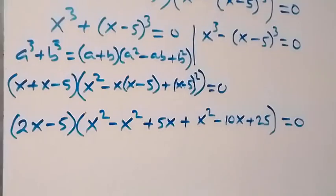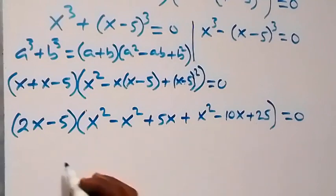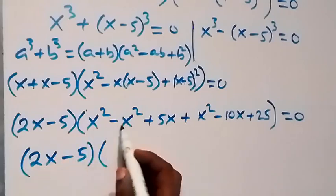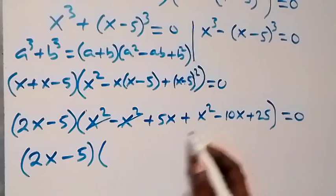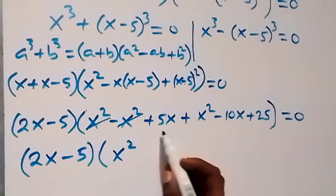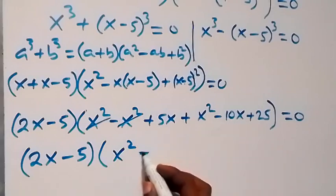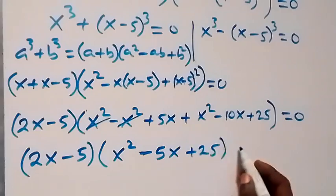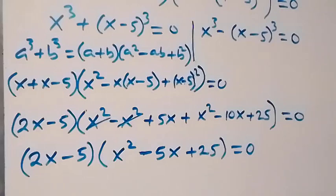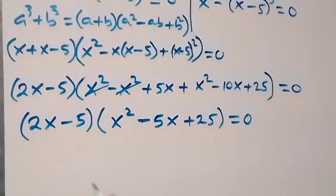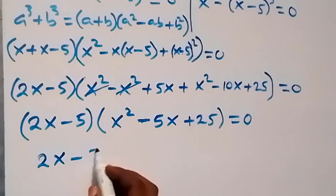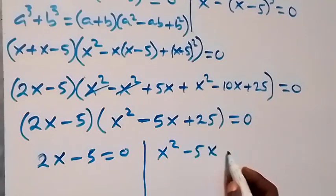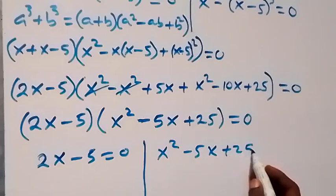After simplification the bracket becomes 2x minus 5, into bracket: x squared and negative x squared cancel out, leaving x squared, plus 5x minus 10x which is minus 5x, plus 25. So we now have 2x minus 5 equals 0, or x squared minus 5x plus 25 equals 0.